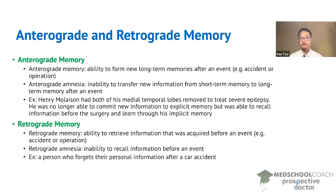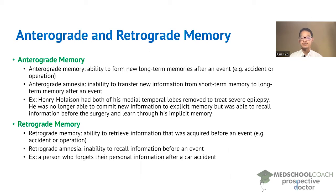In subsequent videos we'll discuss the difference between explicit and implicit memory. Retrograde memory is the ability to retrieve information that was acquired before an event — so your memories before an accident or operation.